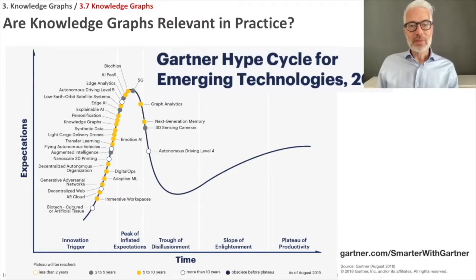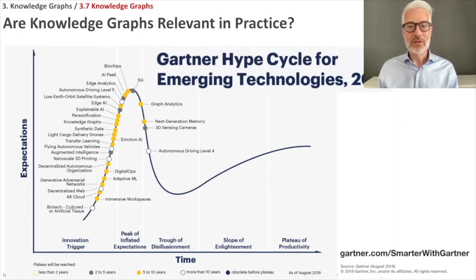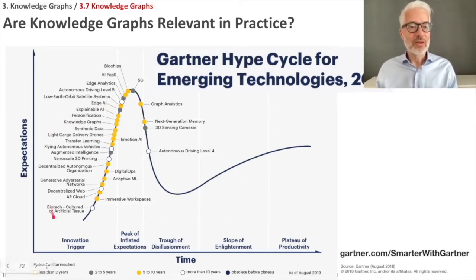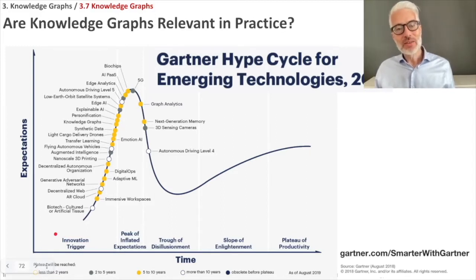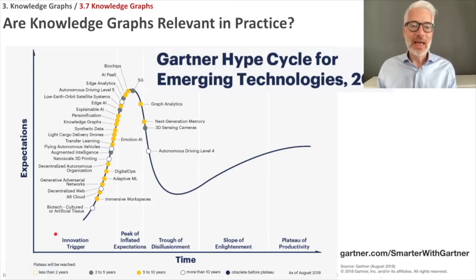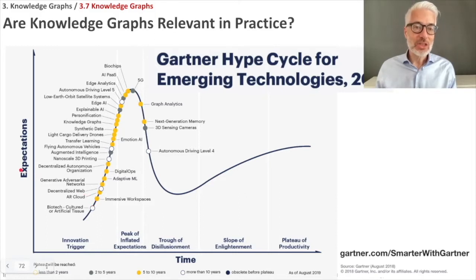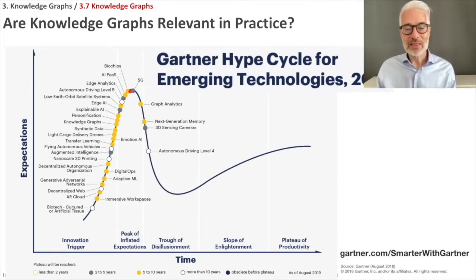If we look at the Gartner Hype Cycle, you can learn something already about knowledge graphs. This is rather interesting because it tells you about every new and innovative technology that enters the market or the attention of the public. What Gartner does is they try to put them on a specific graph, on this curve of a so-called Hype Cycle. This Hype Cycle usually starts with an innovation trigger where everybody has really high hopes, and these expectations rise until they reach a peak — the peak of so-called inflated expectations.